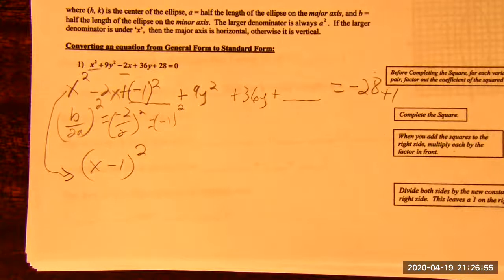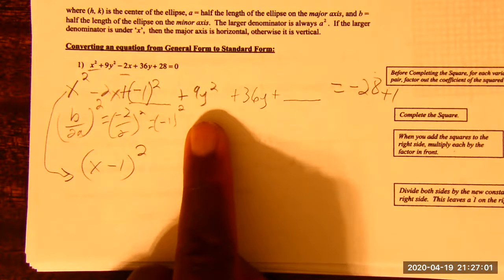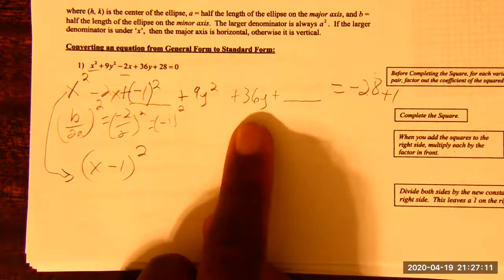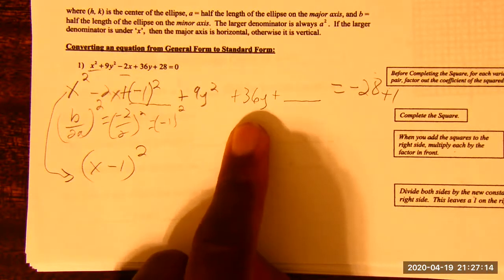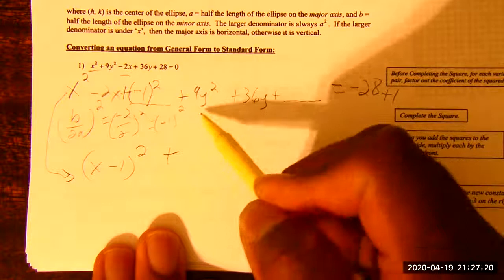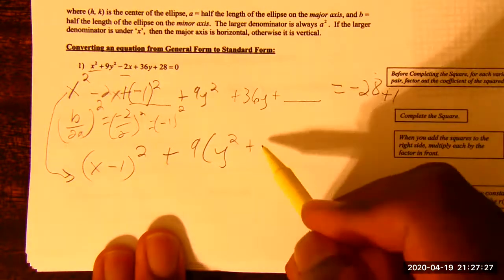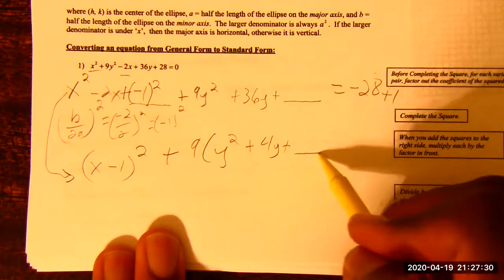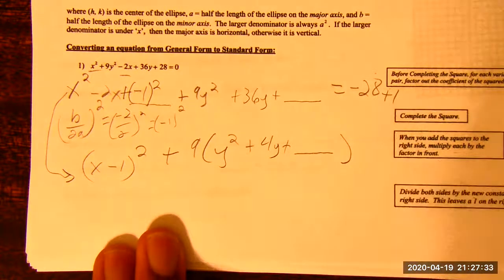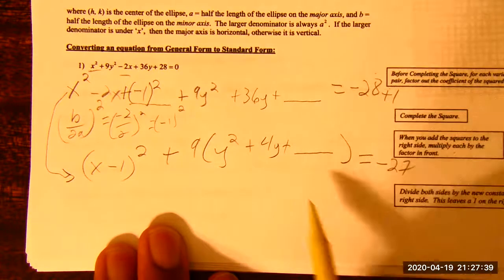So we're gonna do the same thing we did here. We're gonna do that same old b divided by 2a squared. In this case, a is 1 and we always want a to be 1. But in this case, it's gonna be my b is negative 2 divided by 2 squared. And we know that simplifies to negative 1 squared. So I'm gonna add negative 1 squared here. And remember to keep it balanced. I'm gonna have to add negative 1 squared over here as well. Negative 1 squared is positive 1. So I'm just gonna do a plus 1.